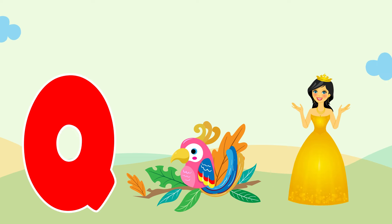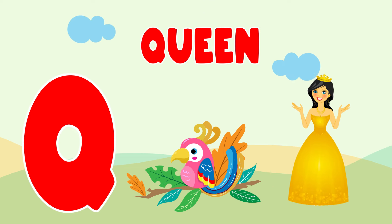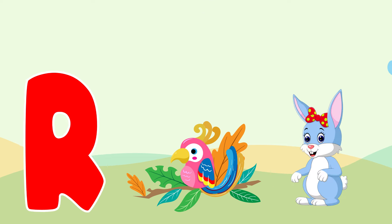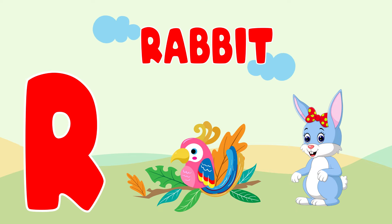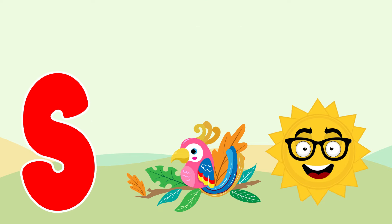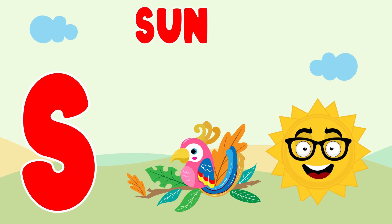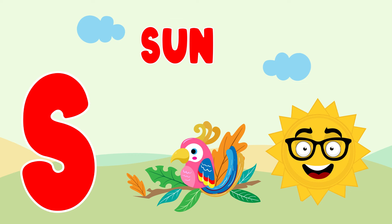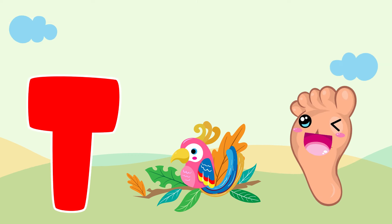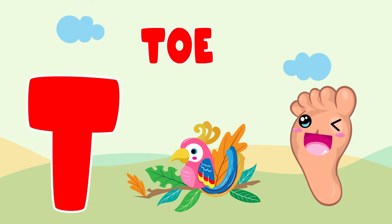Q is for queen, q-q-queen. R is for rabbit, r-r-rabbit. S is for sun, s-s-sun. T is for toad, t-t-toad.